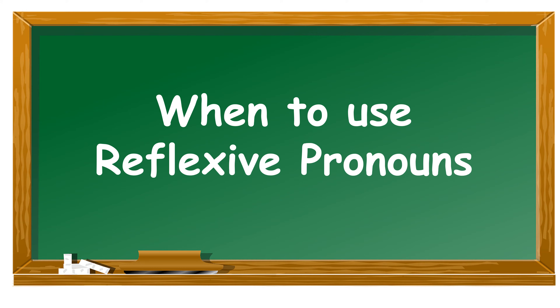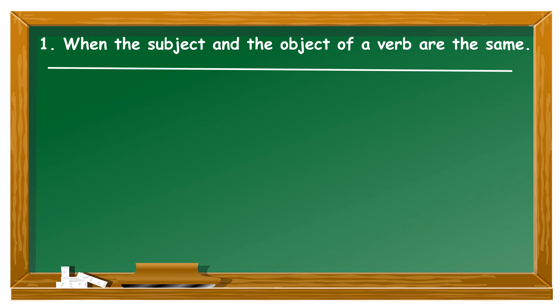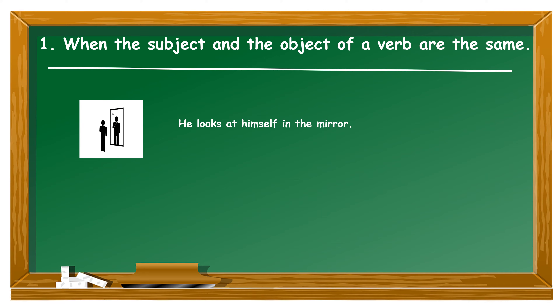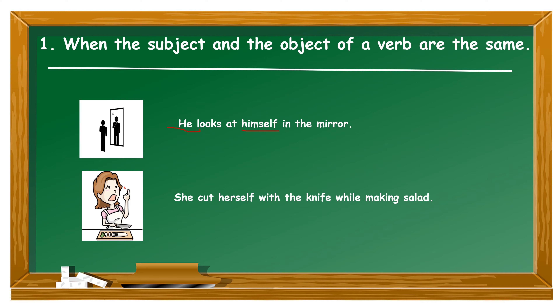Now let's see when we use reflexive pronouns. One reason to use a reflexive pronoun in a sentence is when the subject and the object of a verb happen to be the same. For instance, 'he looks at himself in the mirror.' Here, 'he' appears as the subject but also as the object. Another example: 'she cut herself with the knife while making salad.' Once again, 'she' appears as both the subject and the object.